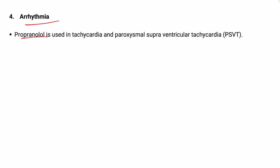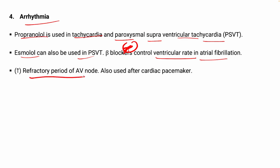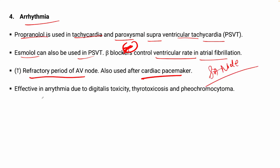In arrhythmias, propranolol is used in tachycardia and paroxysmal supraventricular tachycardia. Esmolol can be used in PSVT. Beta blockers control ventricular rate in atrial fibrillation — remember this. Beta blockers increase the refractory period of the AV node and are also used after cardiac pacemaker implantation when there is replacement of the SA node. Propranolol is effective in arrhythmias due to digitalis toxicity, thyrotoxicosis, or pheochromocytoma.